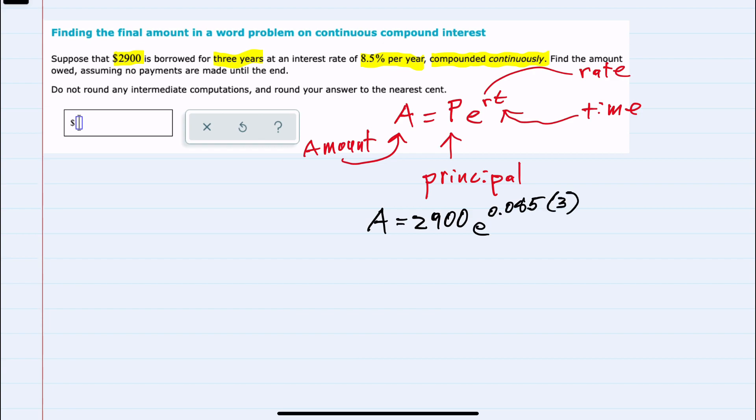So importantly, this is an annual interest rate, and our time is in years, so that matches. I can simplify this expression a bit by doing the multiplication here in the exponent, which gives me 0.255.